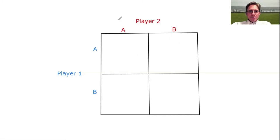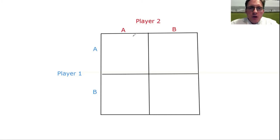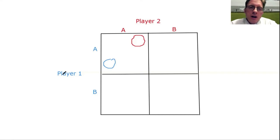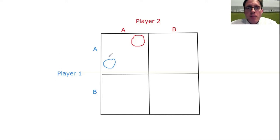In each box, we can write the payoff for each player. The convention is to show the payoff to player two in the upper right-hand portion of the box, and the payoffs to player one in the lower left-hand part of the box. Whichever player determines the row ends up with their payoff in the lower corner, and the player who determines the column has their payoffs in the upper right-hand corner.